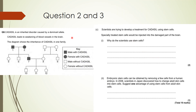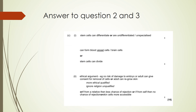More questions here — pause the video and have a go. The answers: stem cells can differentiate, or are undifferentiated and unspecialized; they can form blood vessel cells or brain cells. And here is the ethical argument: there's no risk of damage to an embryo, and an adult can give consent for removal of cells. The embryo isn't conscious yet and can't make that decision, so some people think it may be immoral to destroy it because it hasn't consented.